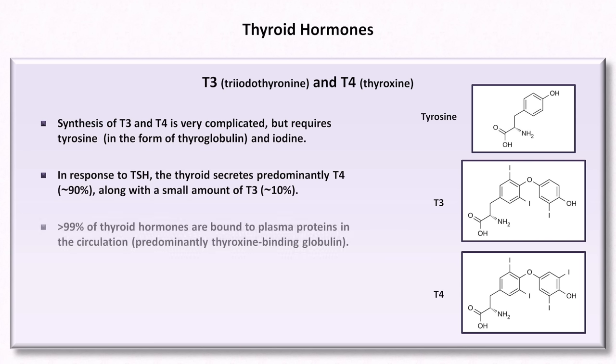After they're released, over 99% of the thyroid hormones are bound to plasma proteins in the circulation. The predominant one is called thyroxine binding globulin, or TBG. Some is also bound to albumin, as well as a protein called transthyretin, so named because it's responsible for the transport of thyroxine and retinol. Only the tiny, free, unbound form of thyroid hormone is physiologically active. The effect of protein binding is clinically important because changes in the concentration of thyroxine binding globulin can affect the concentration of unbound hormone.